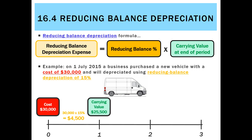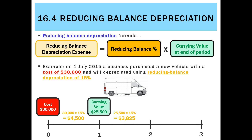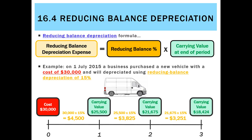In year two, we take our reducing balance percentage of 15% and multiply it by the new carrying value of $25,500, which gives us $3,825. So we've seen depreciation go down from year one to year two. With a carrying value of $25,500 at the start of the period, we depreciate another $3,825, giving a new carrying value of $21,675. In year three, we multiply that by 15% and get $3,251, leaving a new carrying value at the end of year three of $18,424.